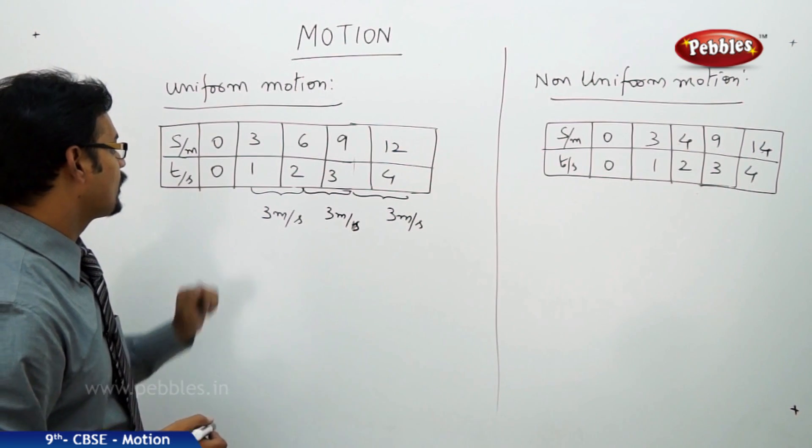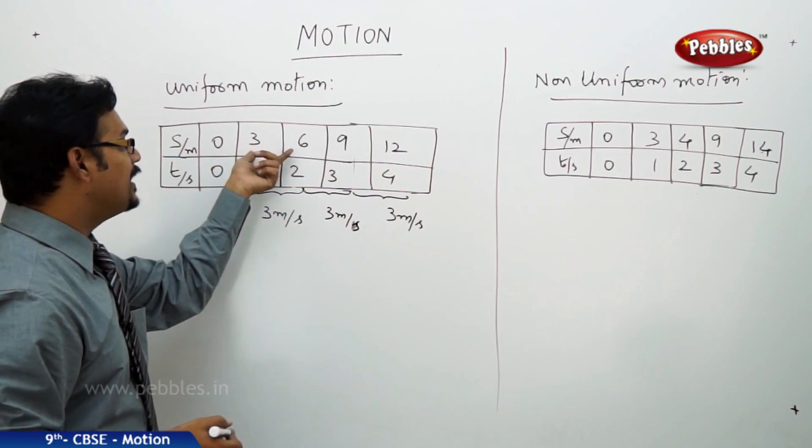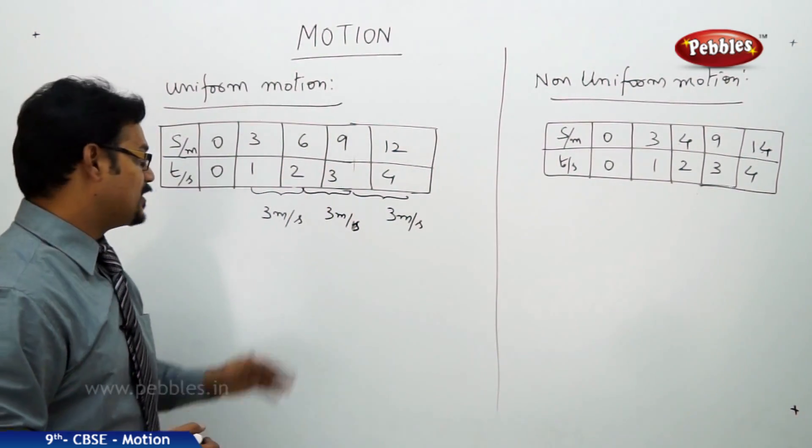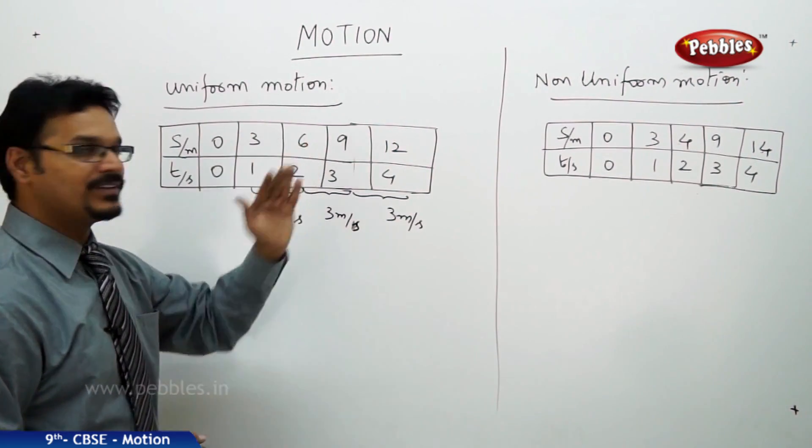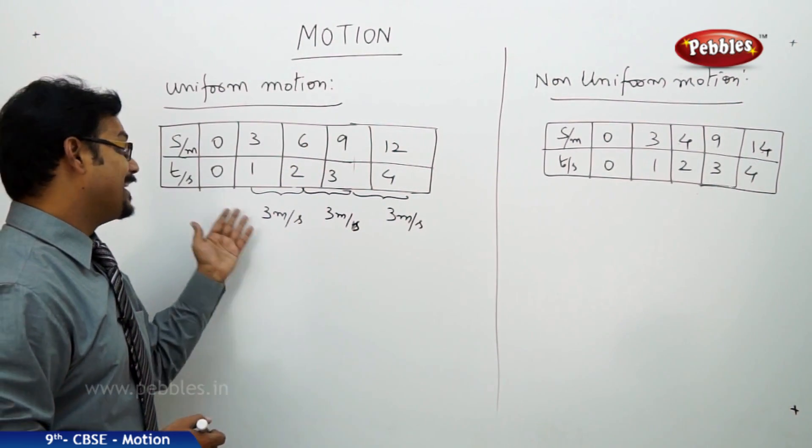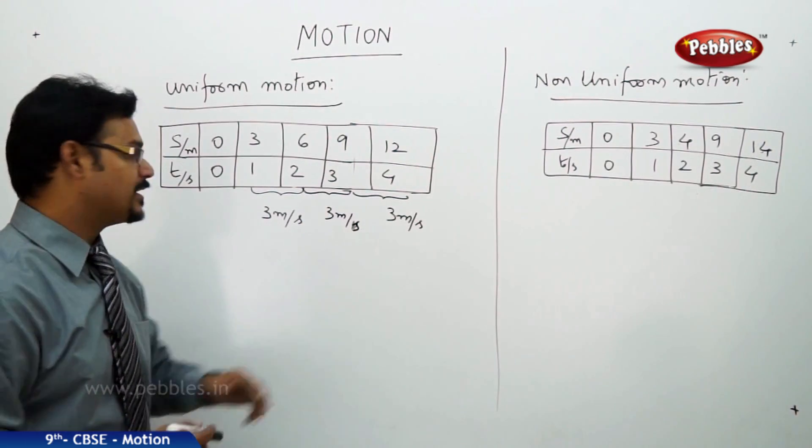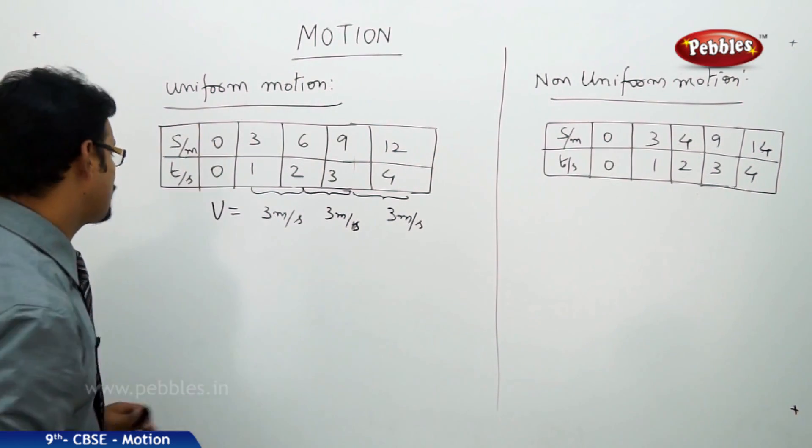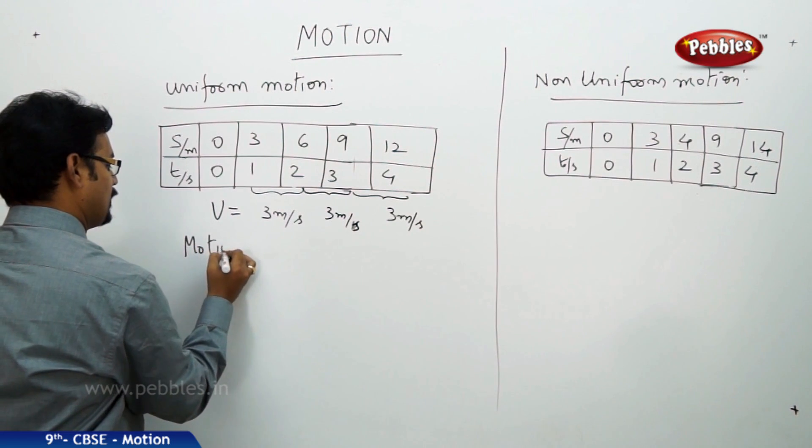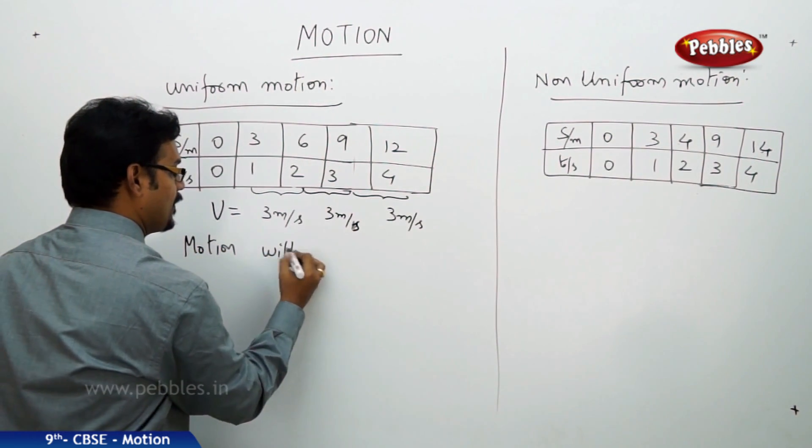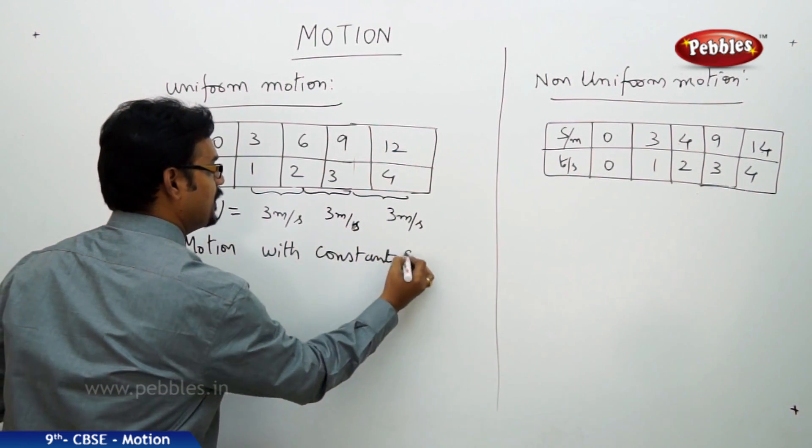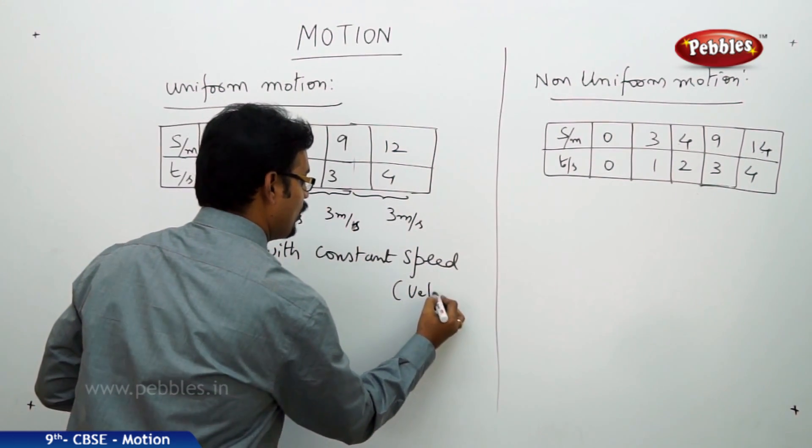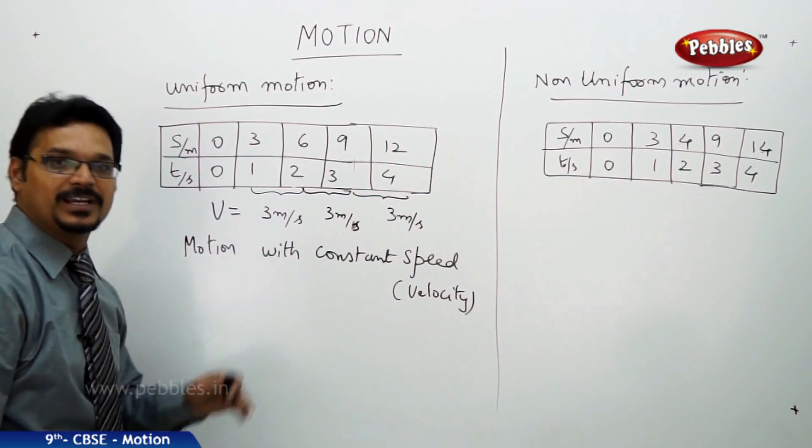So, if you observe carefully, this body covering equal distances - 3 meters, 3 meters, 3 meters - in an equal interval of time. Now, each 1 second, it is covering 3, 3, 3. So, that is why, its speed is 3 meters per second throughout. So, the speed V is constant throughout. So, uniform motion means the motion, motion with constant speed, constant speed. Of course, you can say constant velocity, if the body is in straight line motion.